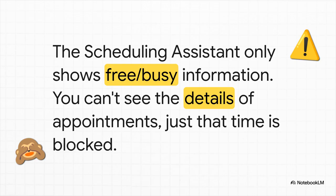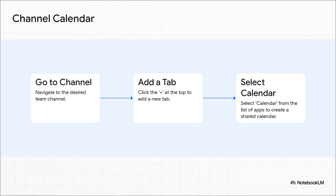You're basically scheduling blind, which can lead to booking over something really important. The second option you have built in is the channel calendar. If you go into any channel and hit that little plus icon, you can add a calendar app that's shared with everybody in that channel. This is awesome for things like project-specific meetings or team events, because it keeps everything tidy and relevant. But again, its view is limited just to that one channel.